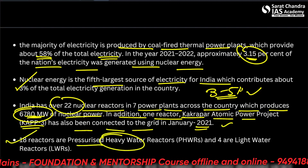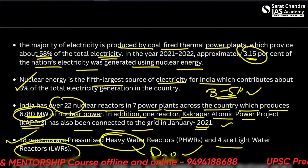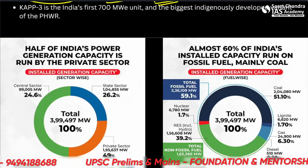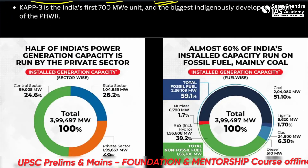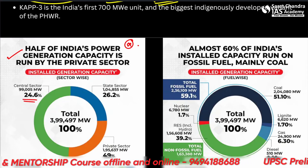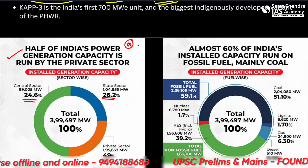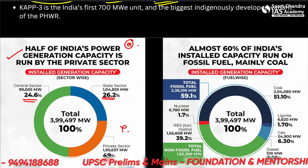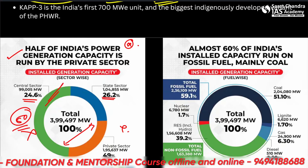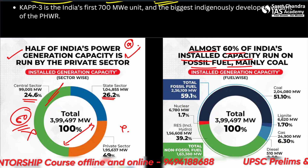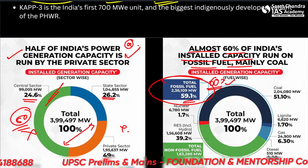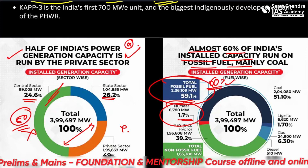Of India's reactors, 18 are pressurized heavy water reactors (using D2O, or deuterium) and four are light water reactors. Regarding India's power generation capacity, the central sector accounts for 24.6%, the state sector 26.2%, and the private sector 49%. Almost 60% of India's installed capacity runs on fossil fuel, mainly coal. Nuclear energy constitutes only about 1.72% to 3% as of end of 2022.